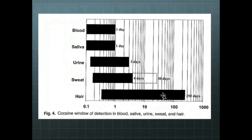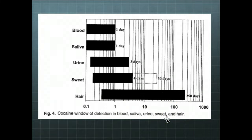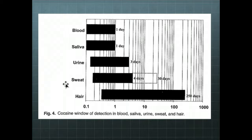A specimen chosen for toxicological testing depends on the question being asked and the time course of drug or metabolites in the specimen. This figure shows the window of detection for cocaine and metabolites in blood, saliva, urine, sweat, and hair. To find out if a person was ever exposed and how often, the best specimens are bones, nails, and hair. To see if a person used cocaine in the past three to seven days, urine or sweat testing is indicated. To determine if a person is under the influence, the test must be done on blood, saliva, or brain tissue in the case of a death investigation.